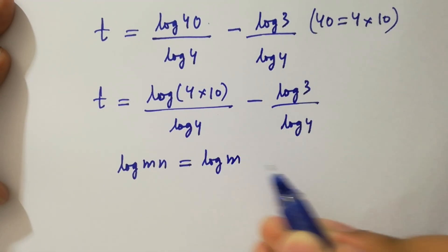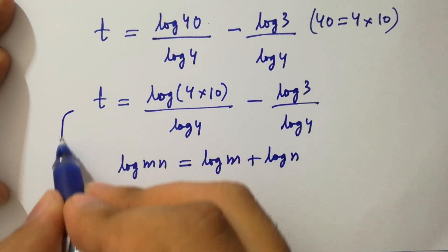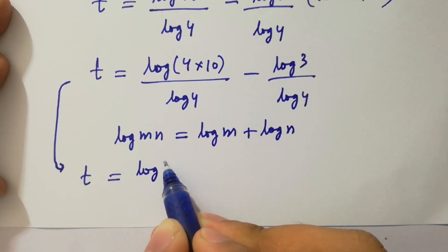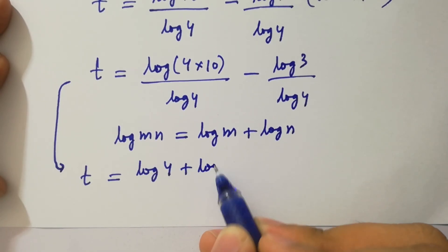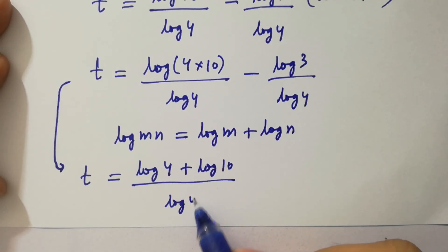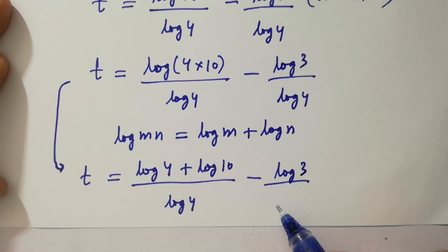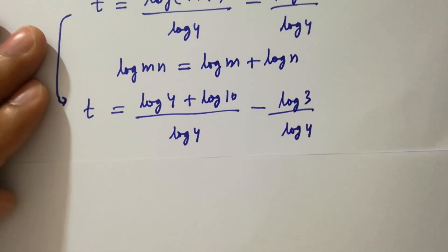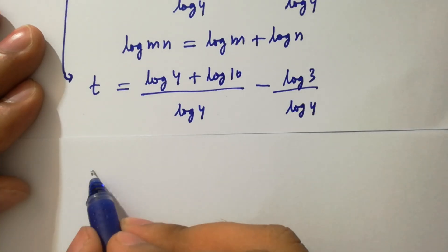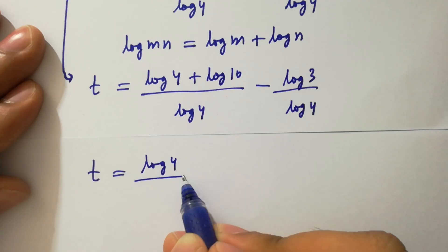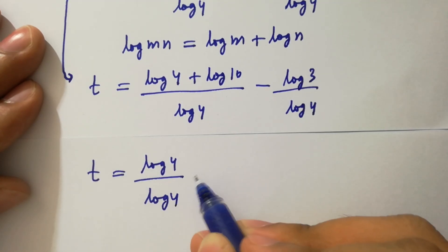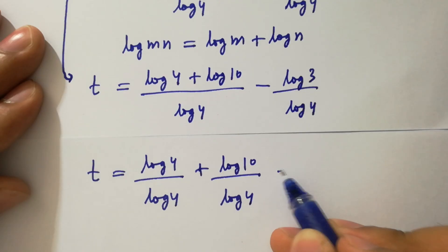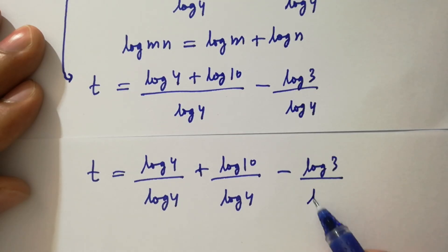Since log m times n equals log m plus log n, we can write t equal to log 4 plus log 10 over log 4 minus log 3 over log 4. Then t equals log 4 over log 4 plus log 10 over log 4 minus log 3 over log 4.